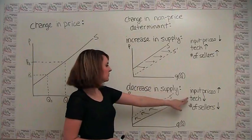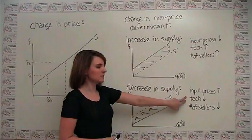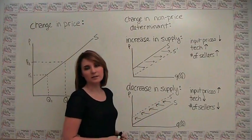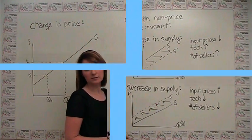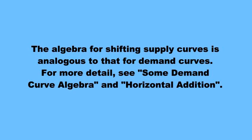and we get a decrease in supply when our input prices go up, when our technology decreases, or when the number of sellers in the market decreases.